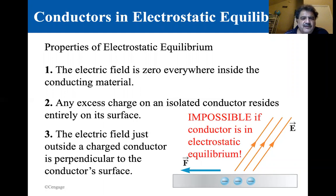Number three: the electric field just outside a charged conductor is perpendicular to the conductor's surface. If it were not, if there were some angle to it, then there would be a horizontal component to the electric field and that would cause a movement of the charge, and that would not be in electrostatic equilibrium.